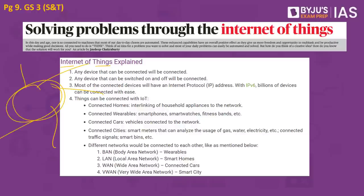Internet is acting as a platform, to which multiple devices are connected, sending data that is stored on a server, creating an exchange of data. Any device that can be connected or switched on and off will be connected. With IPv6, billions of devices can be connected with ease.